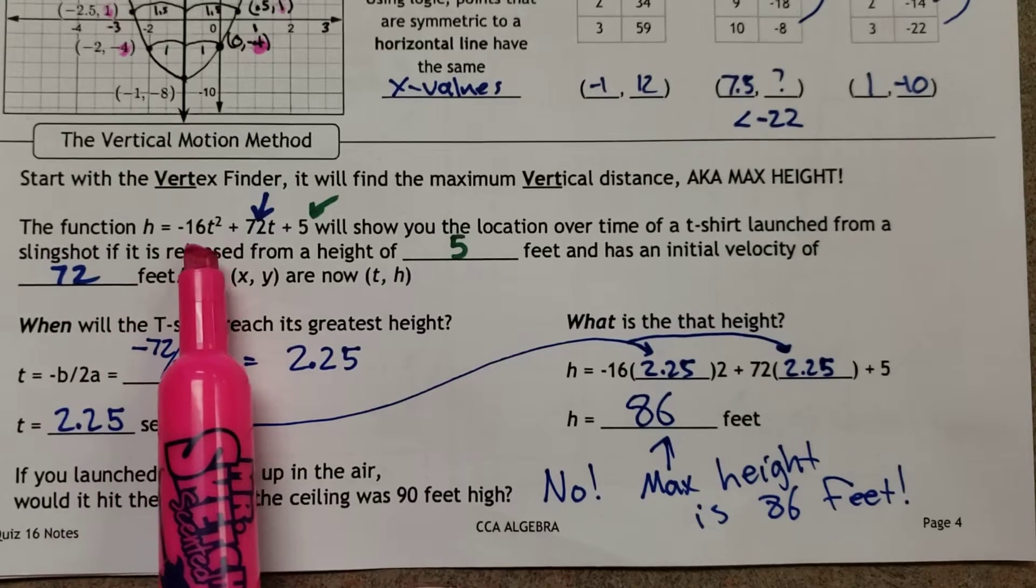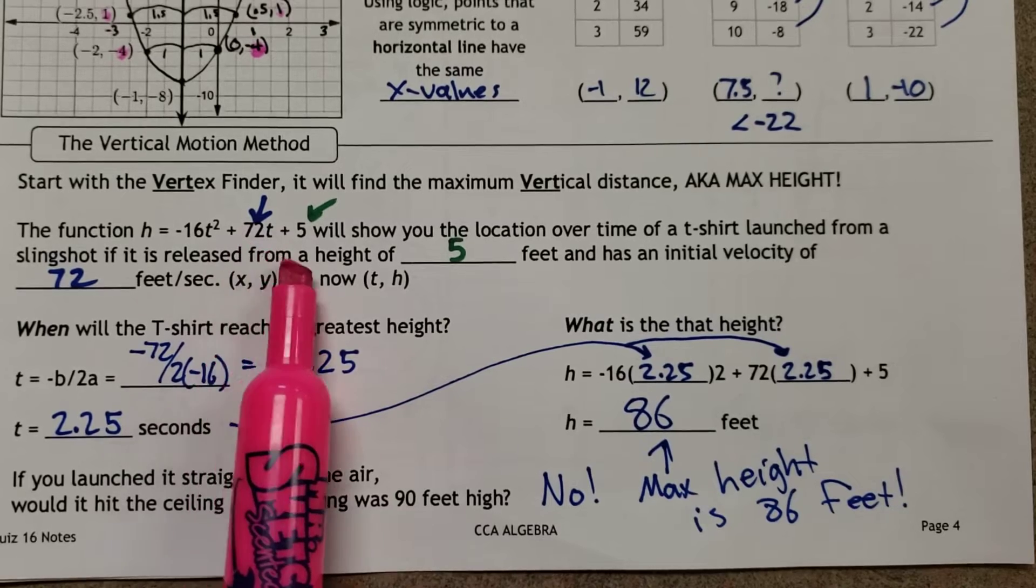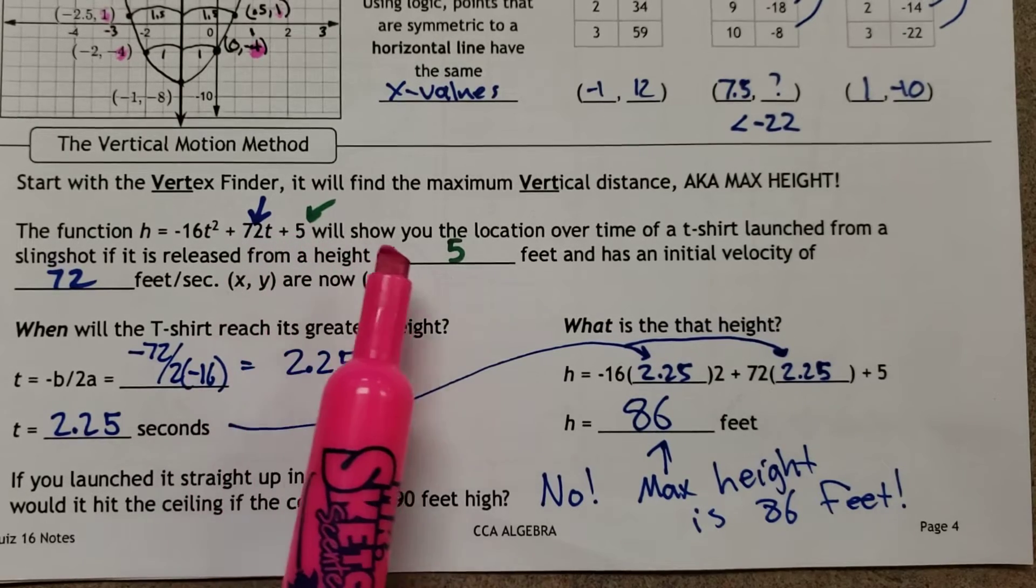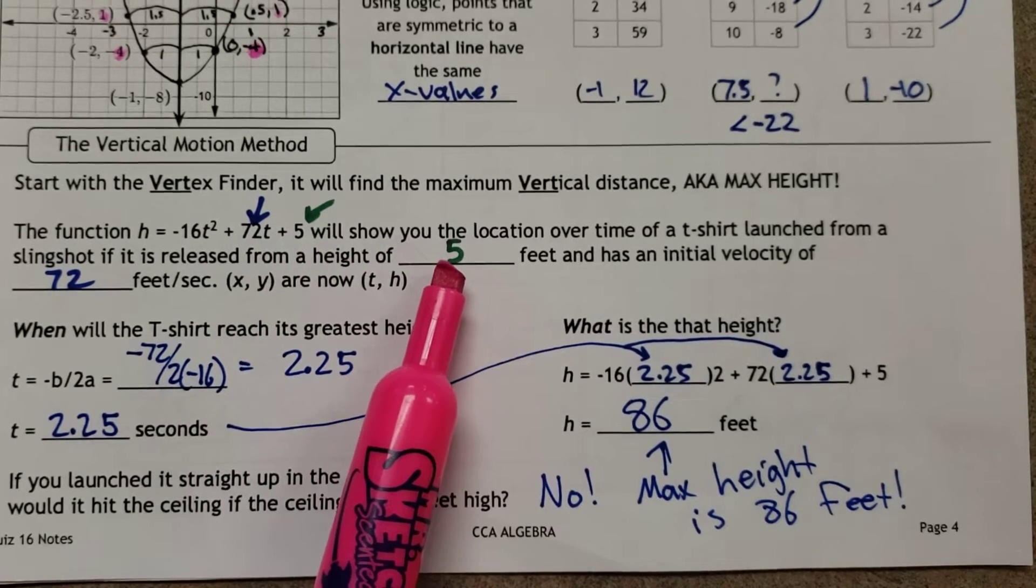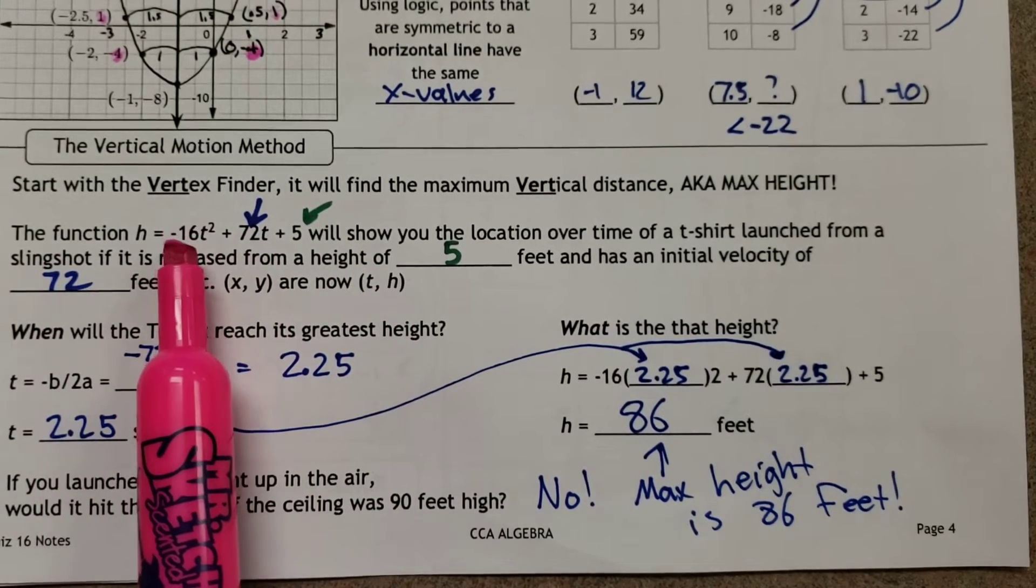So here's the function: h = -16t² + 72t + 5. The only numbers that really matter to us are the 72 and the 5. Five is the initial height of where it first took off. 72 is the feet per second initial velocity.